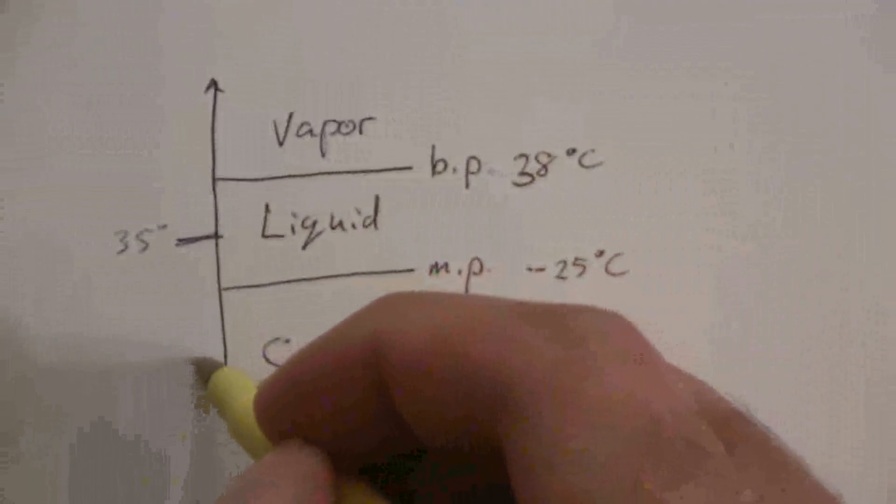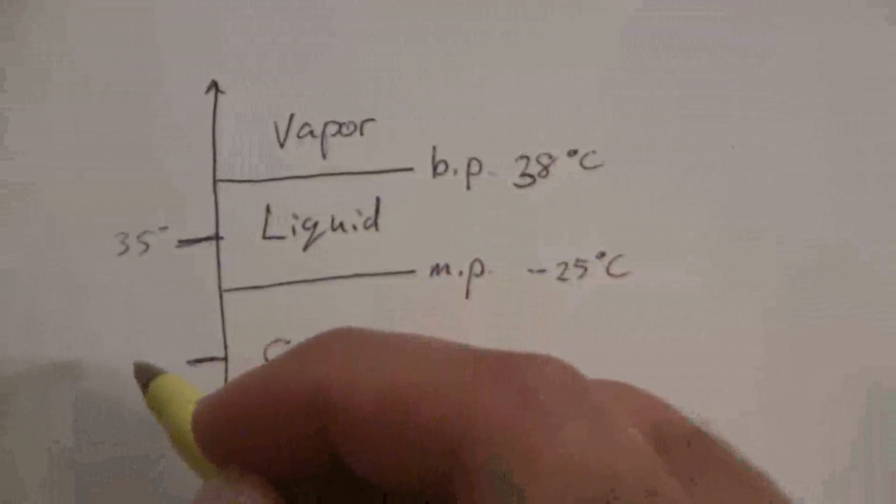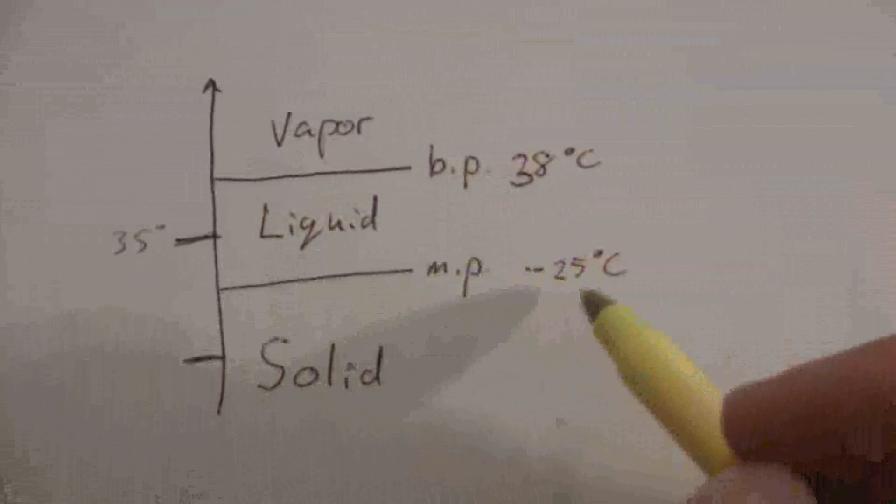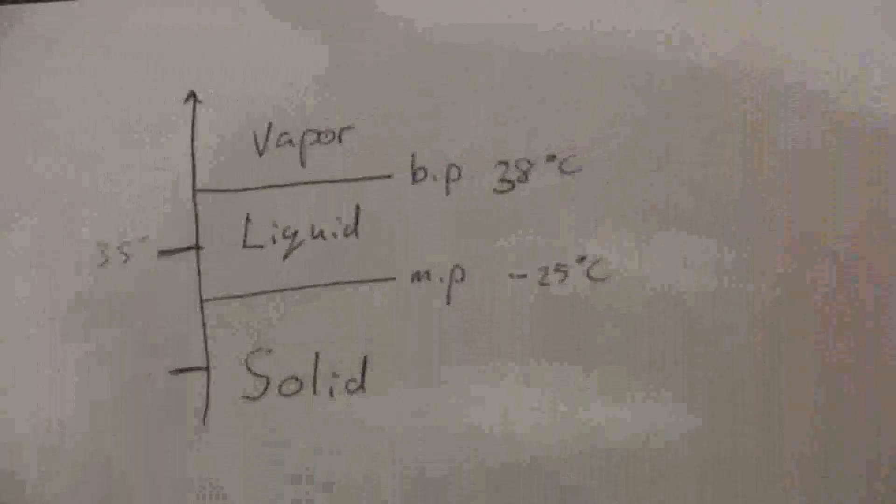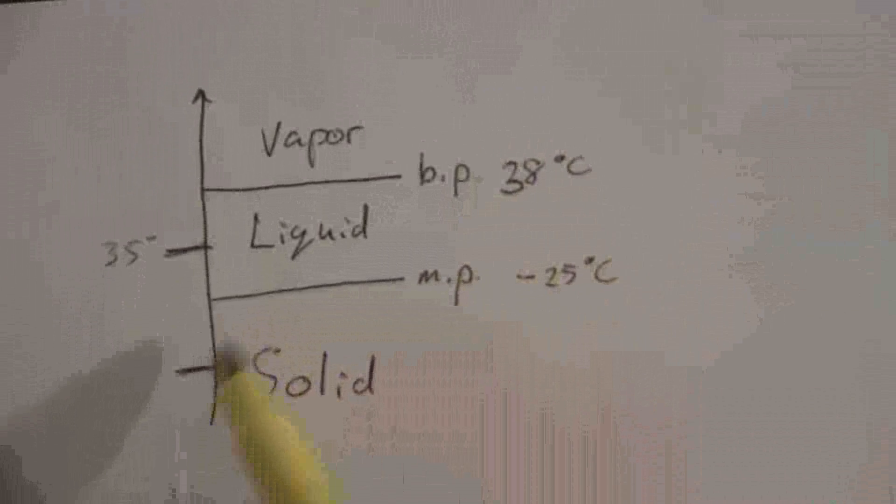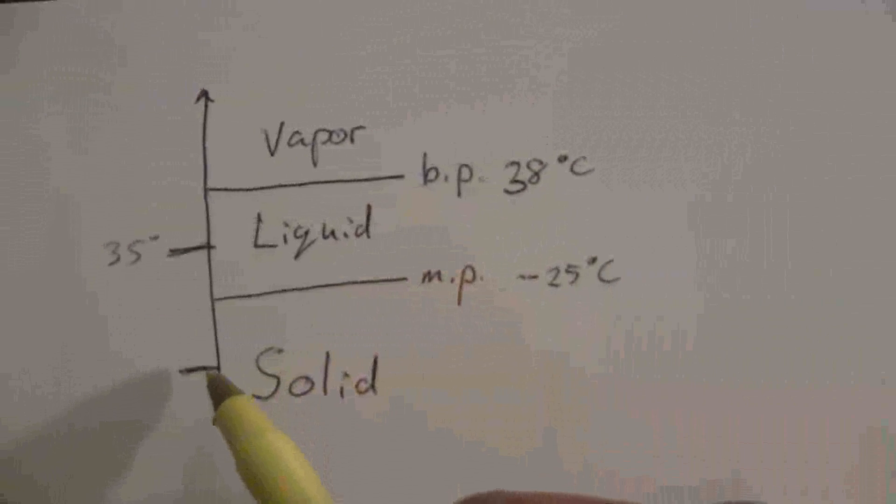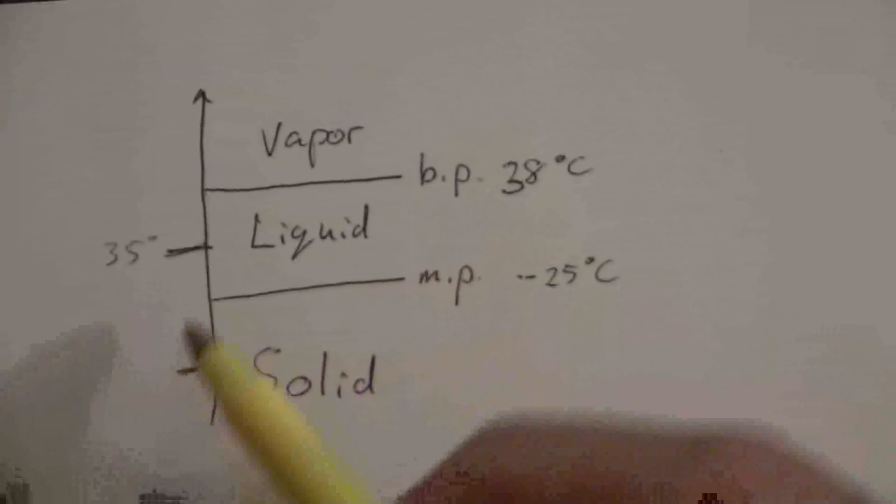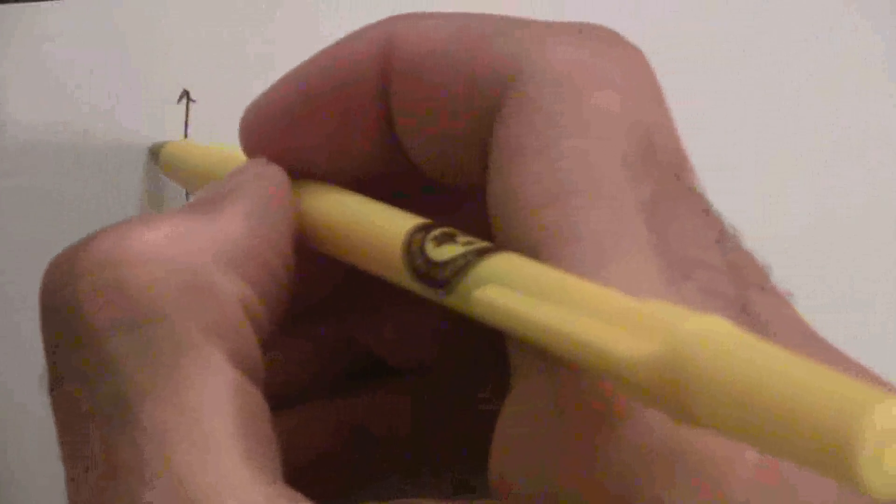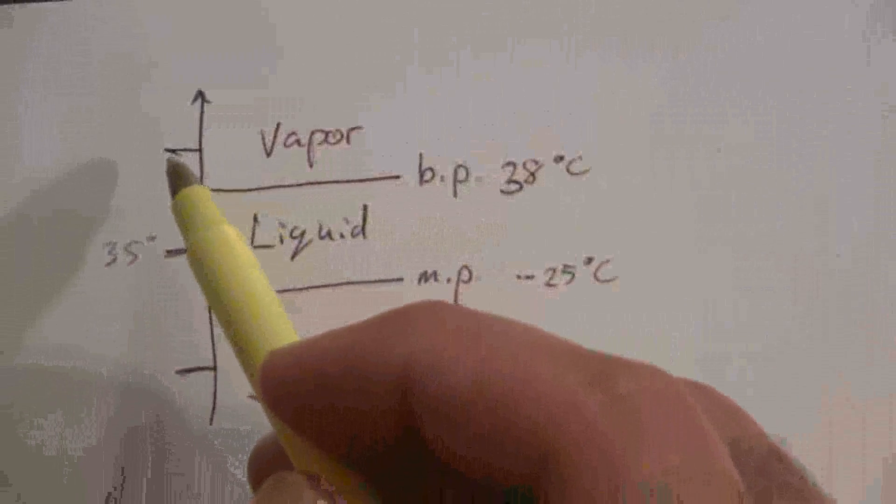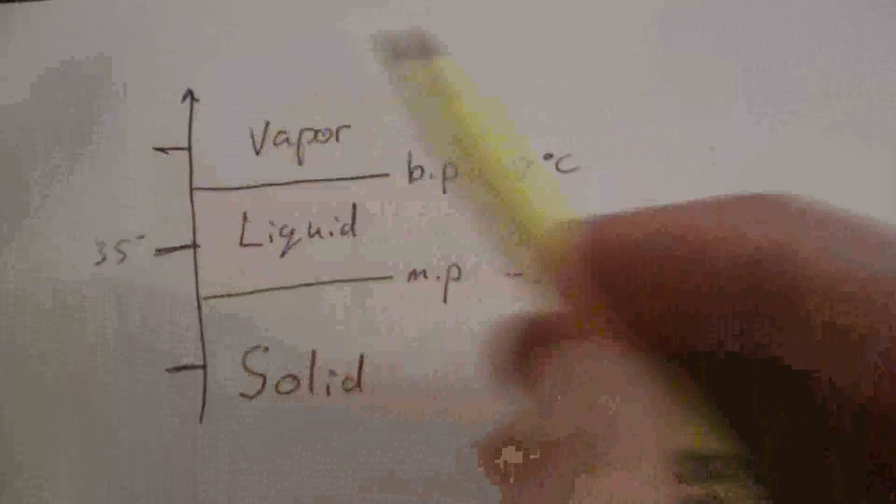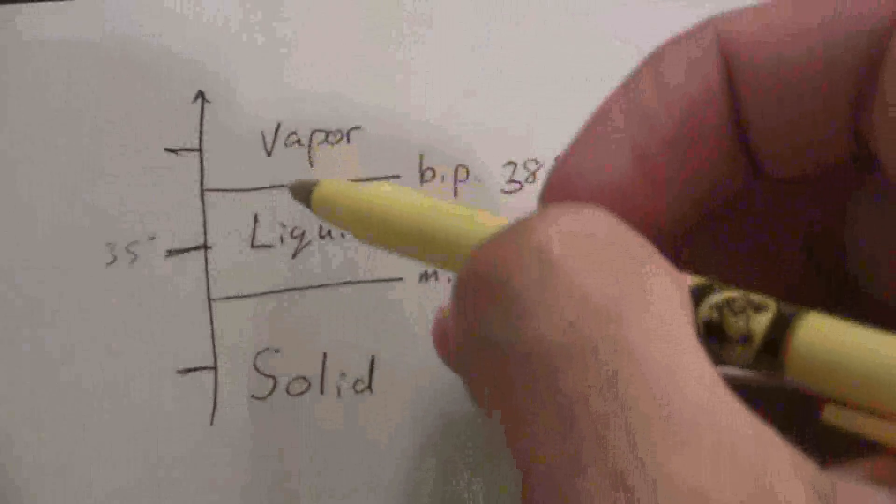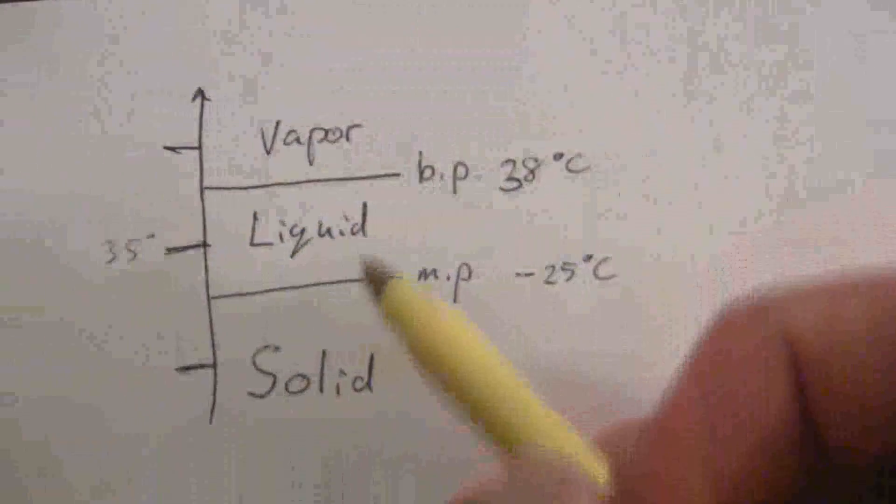If you want to know whether it's a solid at that temperature, then both the melting and the boiling point, but particularly the melting point, because the boiling point is always going to be above the melting point. But both of those would have to be above that given temperature. Or if you want to know whether it's a vapor at a given temperature, then the boiling point and consequently the melting point would both have to be below that temperature.